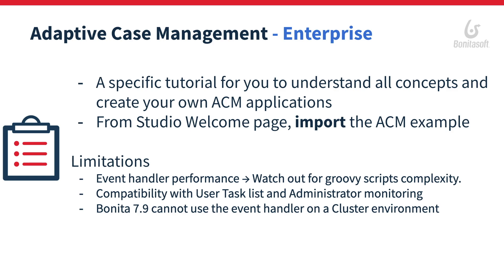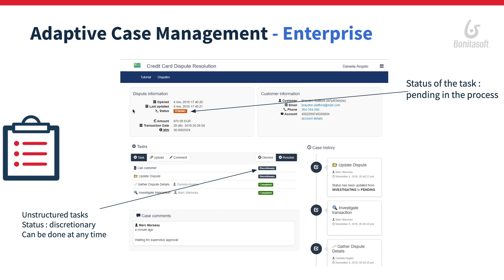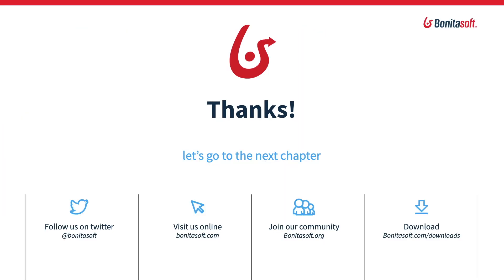Now let's have a look at the results. Here you have the dashboard, which gives a very good overview of what you can create thanks to this project. You have all the information from the customer, the dispute information with the status of the task — here it shows pending because it's a specific task in the process, but you could also use different unstructured tasks. The case history will give all the details, including tasks that were not in the process. If you want more details, the full demo will be available on YouTube. Otherwise, my advice would be to import the project and give it a try.